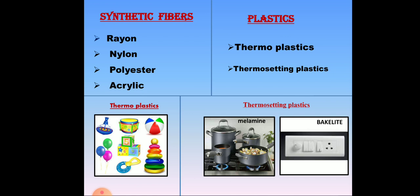There are four different varieties of synthetic fibers: rayon, nylon, polyester, and acrylic. There are also two different types of plastics: thermoplastics and thermosetting plastics. Thermoplastics are used to make combs, toys, mugs, buckets, etc. Thermosetting plastics are of two different types: melamine and bakelite.